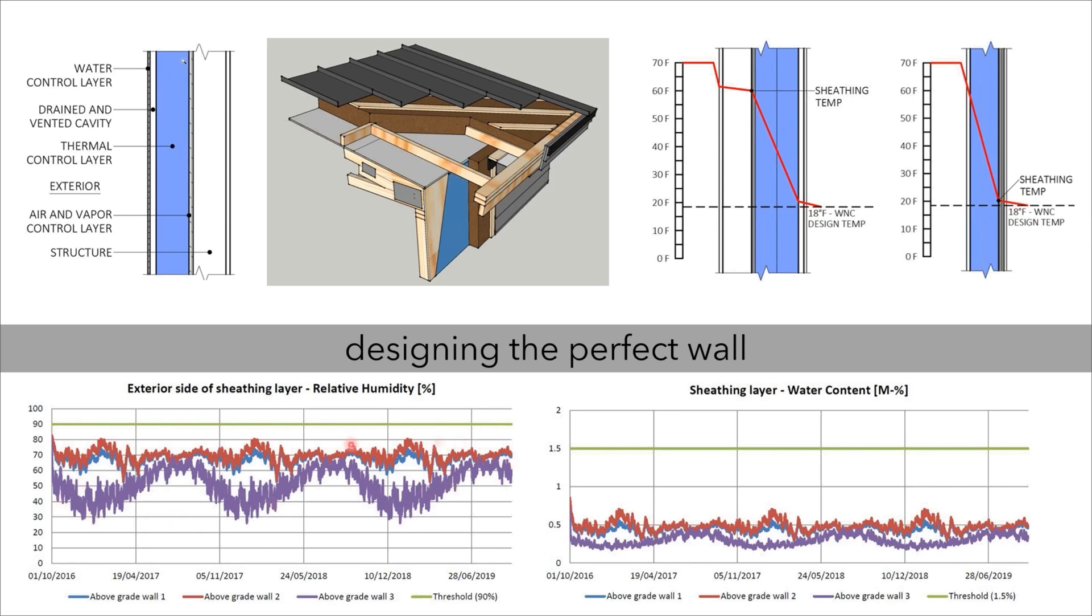This analysis here is from one of our building science friends at Rockwool. He does these for us. What it shows is this green line is our threshold. We don't want our moisture risk to reach this level. These are the different assemblies that we had on a particular project, and we were sampling each one. The one that has the least risk, the further away from this green line, that's the right balance of insulation on the exterior.